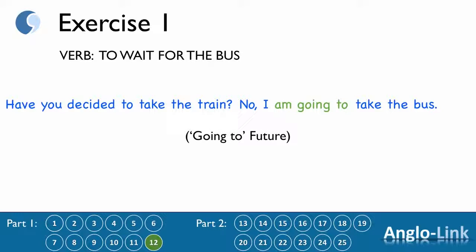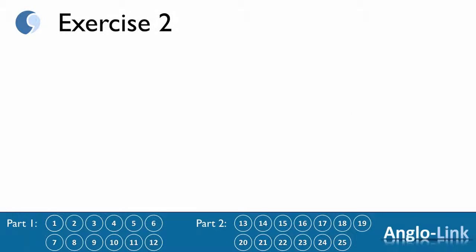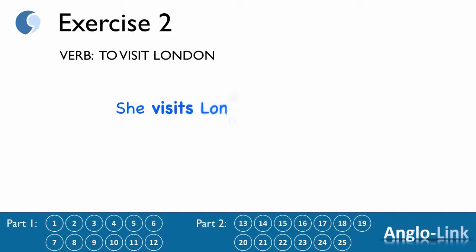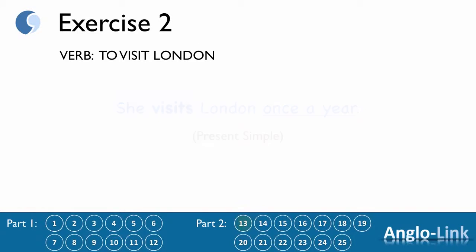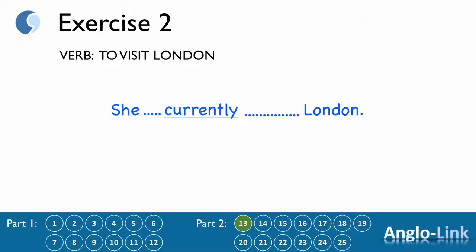Right then, let's move on to Exercise 2. Verb: to visit London. Base sentence: 'She visits London once a year.' Present simple. As with the previous exercise, I am going to change the time marker and you are going to give me the right tense. Number 13: 'She ___ London currently.' Answer: 'She is currently visiting London.' Present continuous.